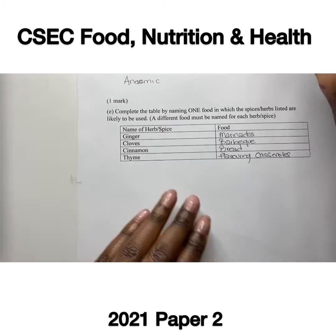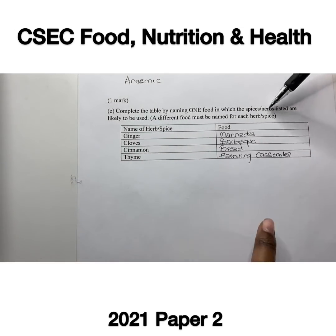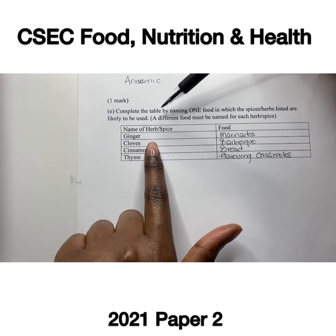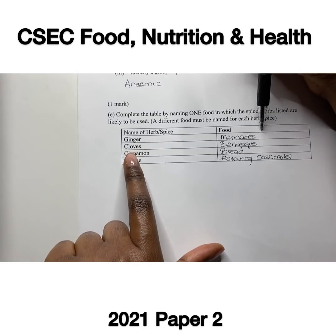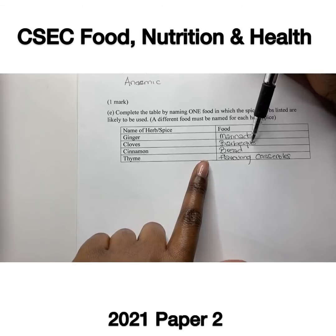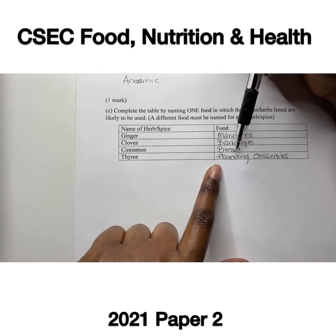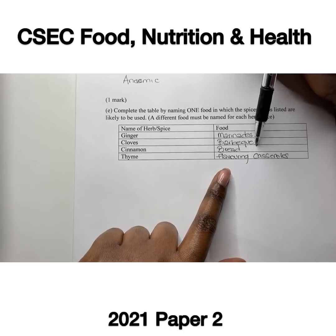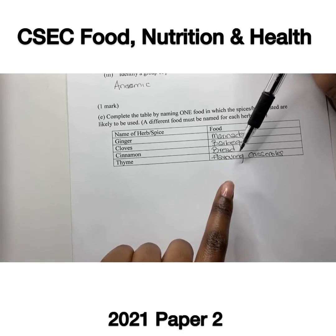Part E asks to complete a table naming one food in which listed spices or herbs are likely to be used. Ginger can be used for marinades. Cloves can be used in barbecue chicken or pork. Cinnamon is used in pastry such as breads or muffins. Thyme is primarily used in flavoring poultry or casseroles. Thanks for watching — remember to like, share, and subscribe.